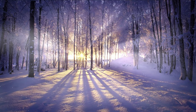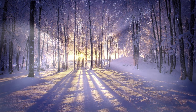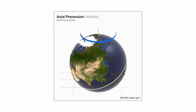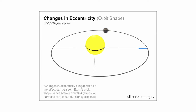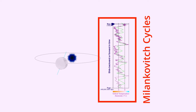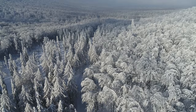The conductor of this icy symphony is none other than our Sun. Earth's tilt, wobble and orbit, known as Milankovitch cycles, influence how much sunlight reaches different parts of the planet. Think of it like a cosmic thermostat — slight changes can tip the scales between warm summers and frigid winters.